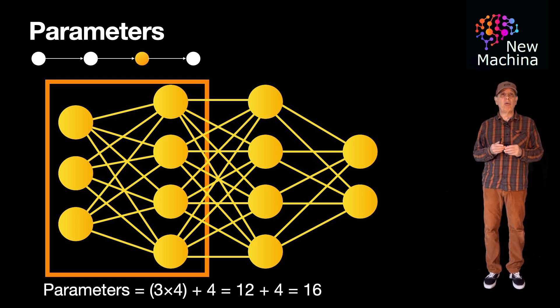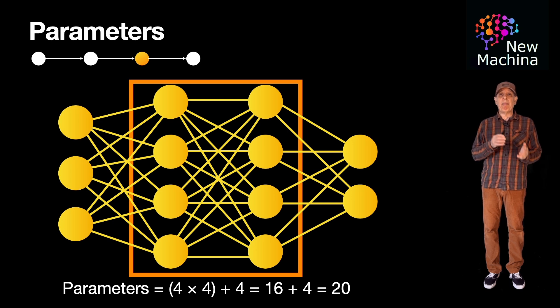So in step two, from the first hidden layer with four neurons mapping to the second hidden layer with four neurons, we get four times four plus four biases, which is equal to 20 parameters.